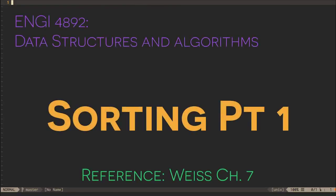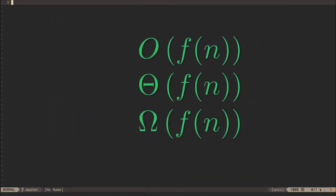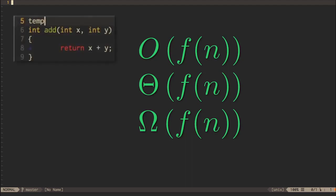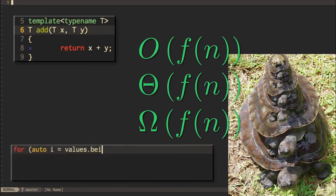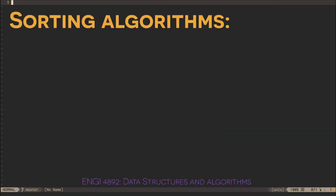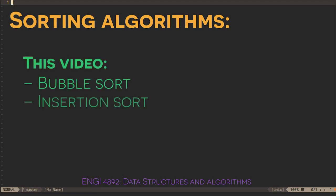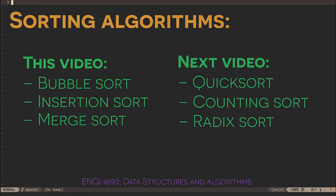Sorting algorithms give us an opportunity to apply what we've learned about algorithm analysis together with the writing of template functions, as well as an opportunity to review recursion and STL abstractions like iterators. We will look at the venerable but terrible bubble sort, the somewhat better insertion sort, the simple but performant merge sort, the ubiquitous quicksort, and a couple of special-purpose sorting algorithms.